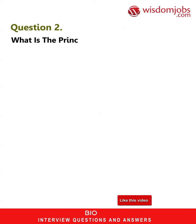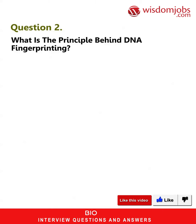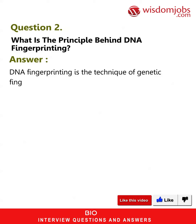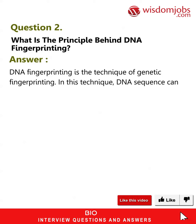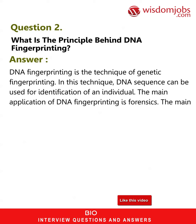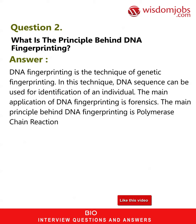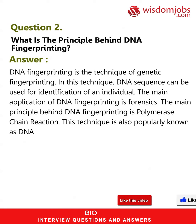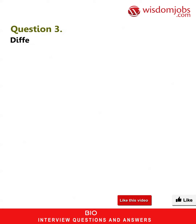Question 2: What is the principle behind DNA fingerprinting? Answer: DNA fingerprinting is the technique of genetic fingerprinting. In this technique, DNA sequence can be used for identification of an individual. The main application of DNA fingerprinting is forensics. The main principle behind DNA fingerprinting is polymerase chain reaction. This technique is also popularly known as DNA profiling.